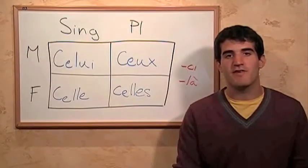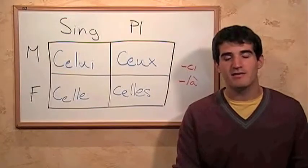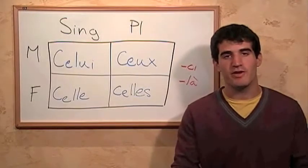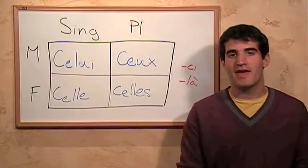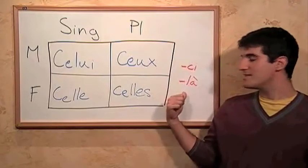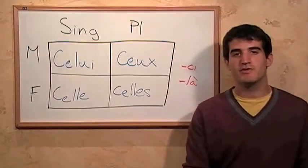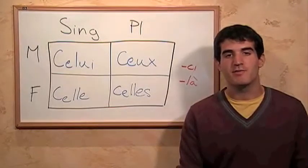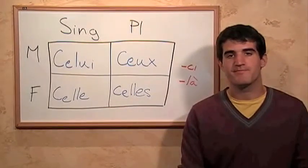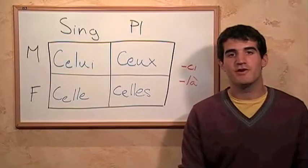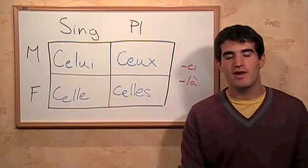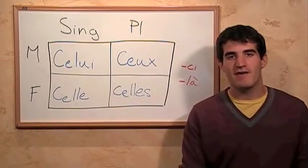If we want to specify 'this' or 'that' — like in English, where we distinguish something closer to you or farther away from you — we can add the endings '-ci' and '-là,' just as we do for the demonstrative adjectives. But whereas for the demonstrative adjectives we add this after the noun, in these cases, since these are already pronouns, we add them directly after the pronouns themselves.